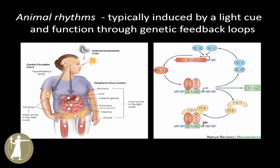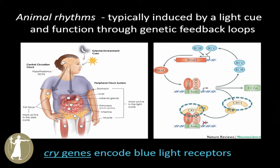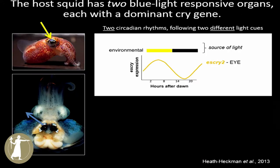Animal rhythms are typically induced by a light cue and function through genetic feedback loops. There's typically a central clock set by the sun or the moon, and then peripheral clocks that, when there's only a single light cue, are typically set by the sun. I'm going to focus on a couple of genes we found in the squid — the cry genes, which stand for cryptochromes. The cryptochrome genes are blue light receptors. The squid has two blue-light-receptive organs instead of one: the eye and the light organ. Each has a dominant cry gene.